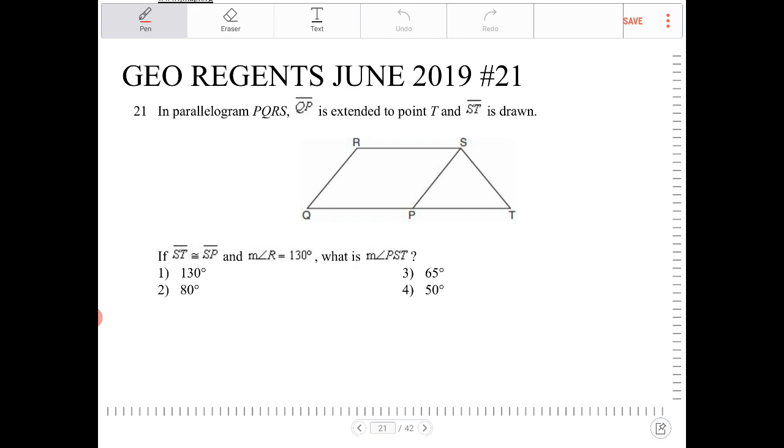If ST is congruent to SP, and angle R is equal to 130 degrees, what is angle PST?